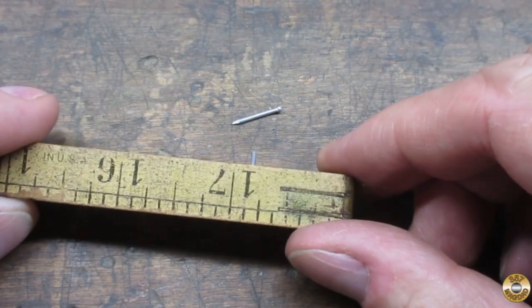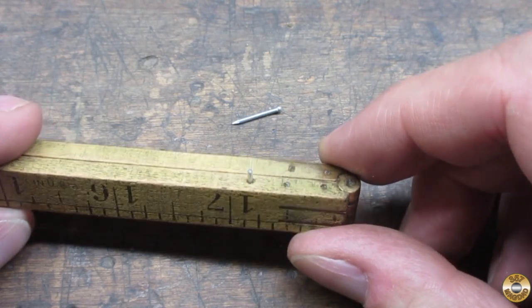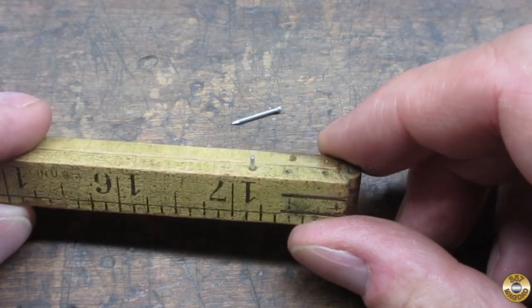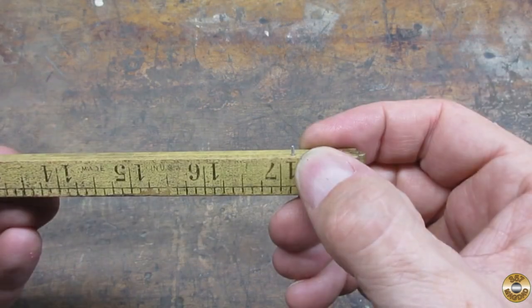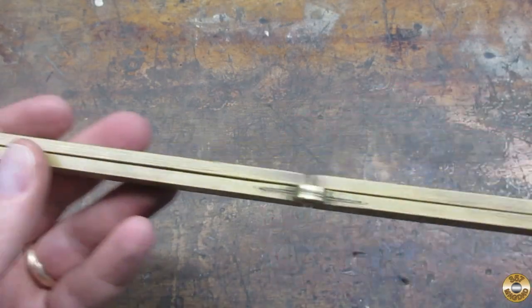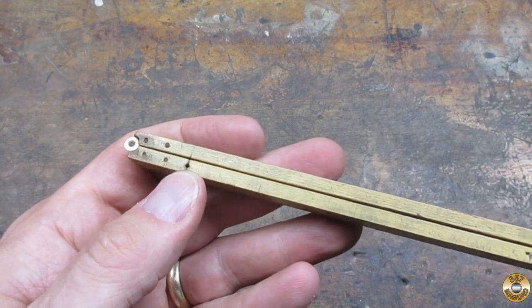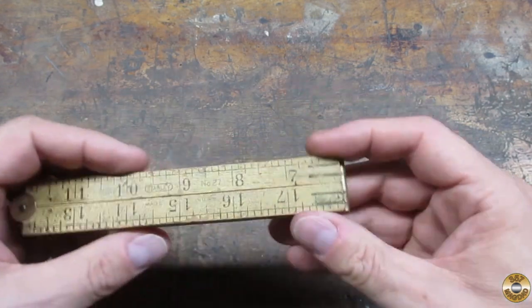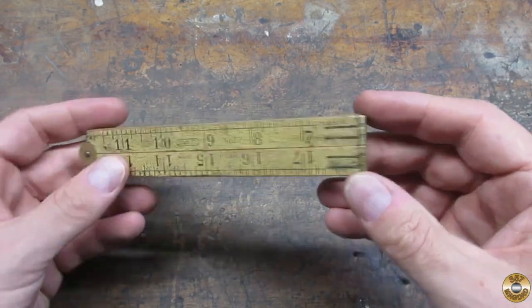I tapped a tiny nail into one hole and cut off the head. I drilled out the matching hole to accept my nail pin. Now it stays aligned when collapsed. Much better.